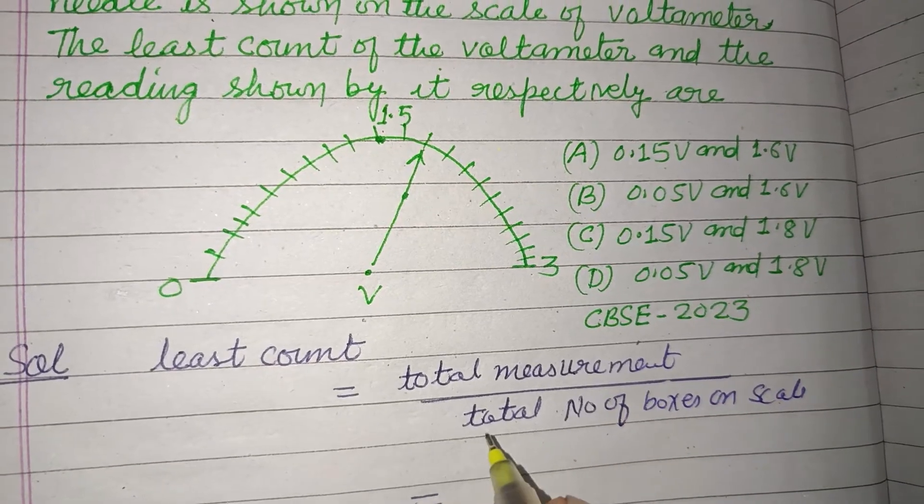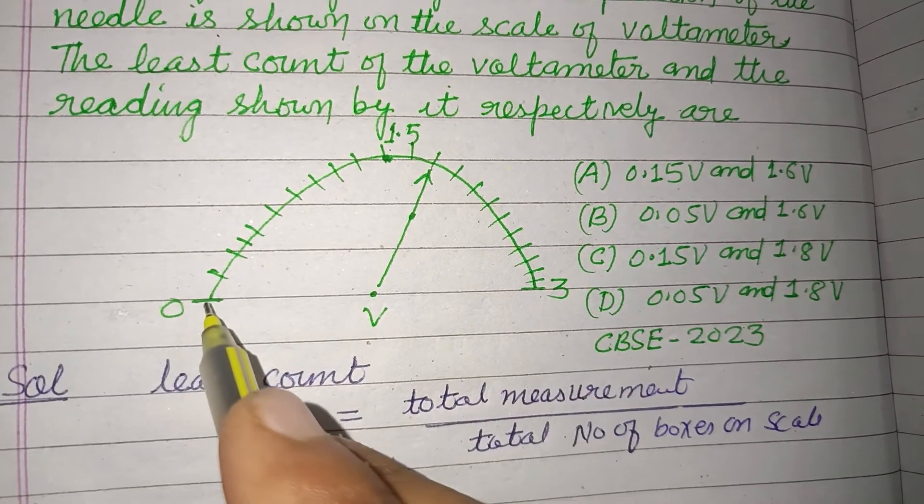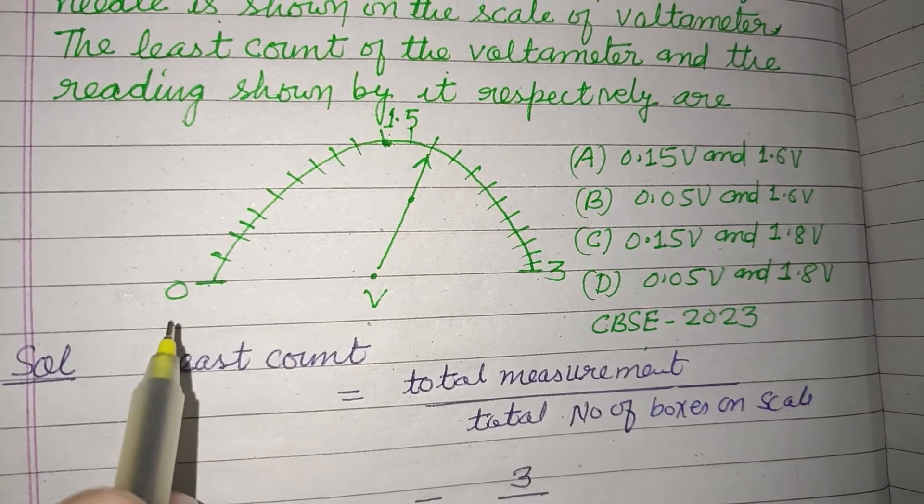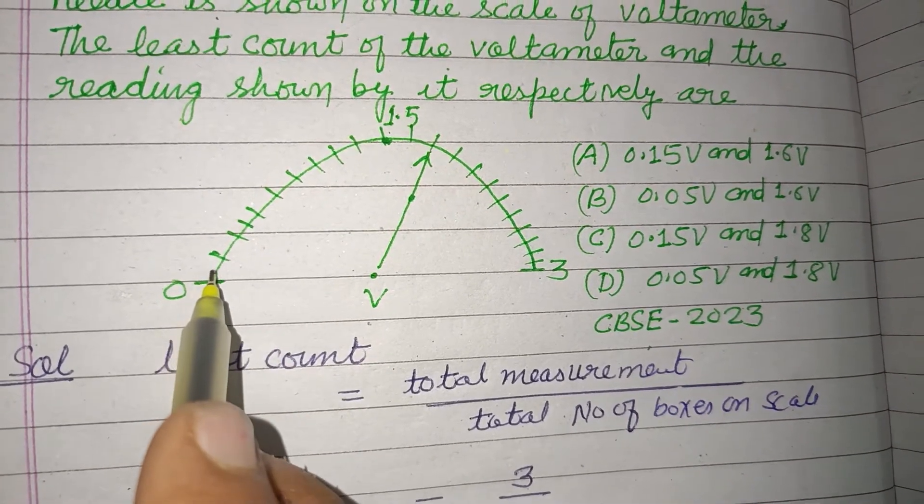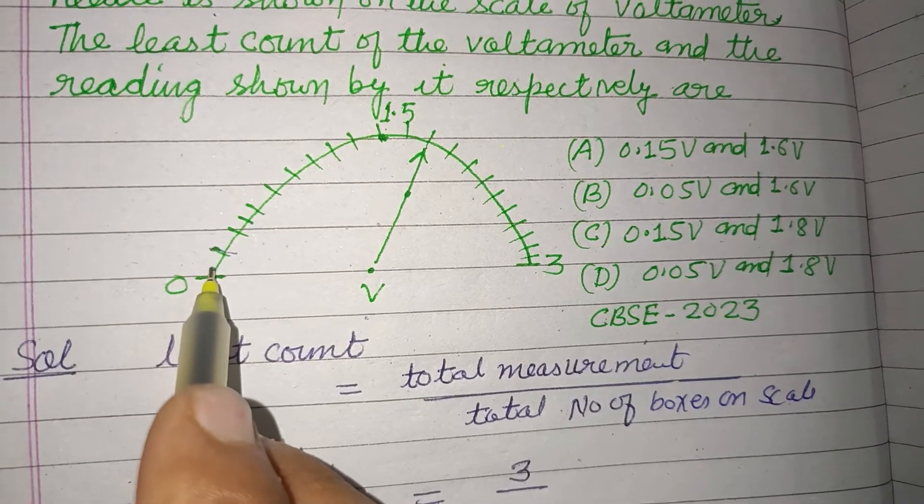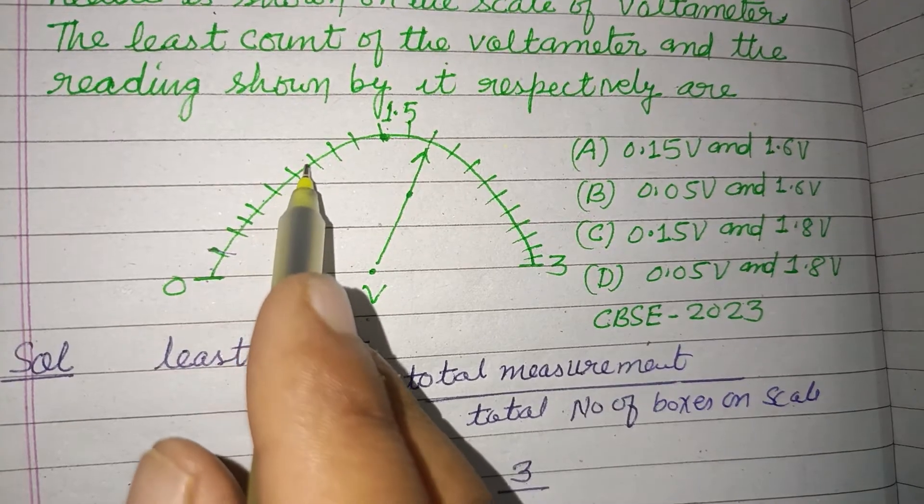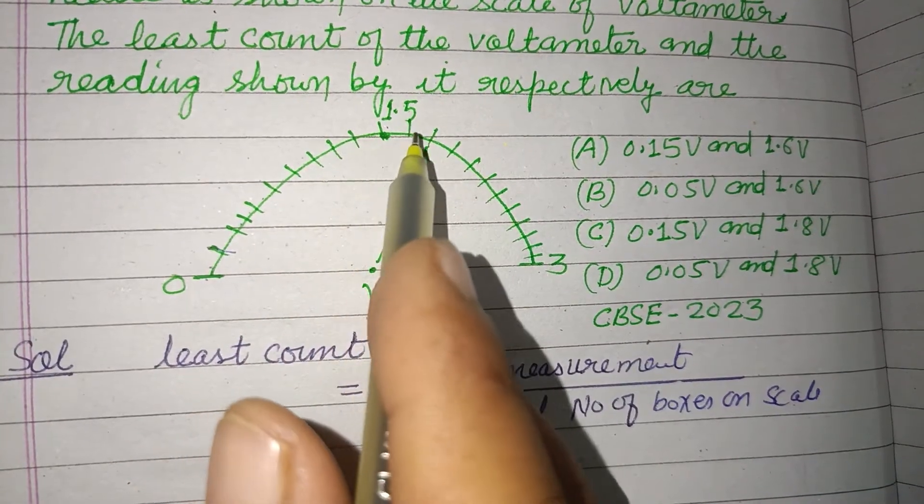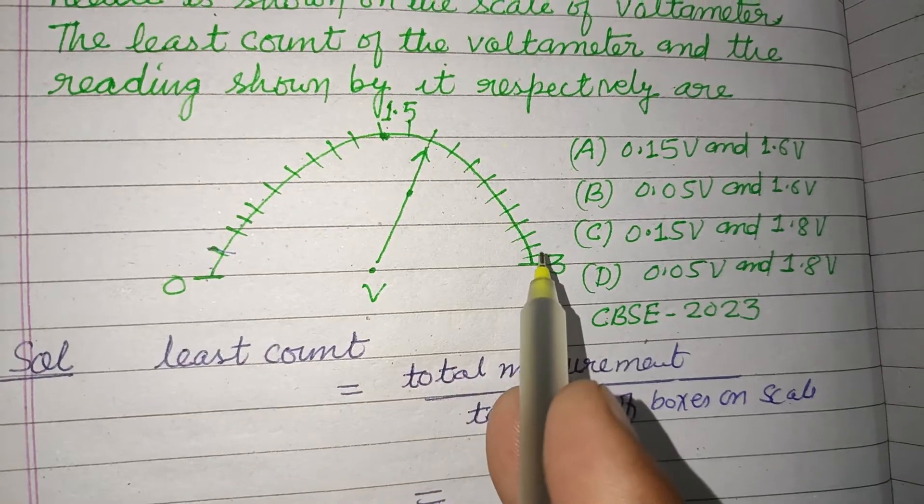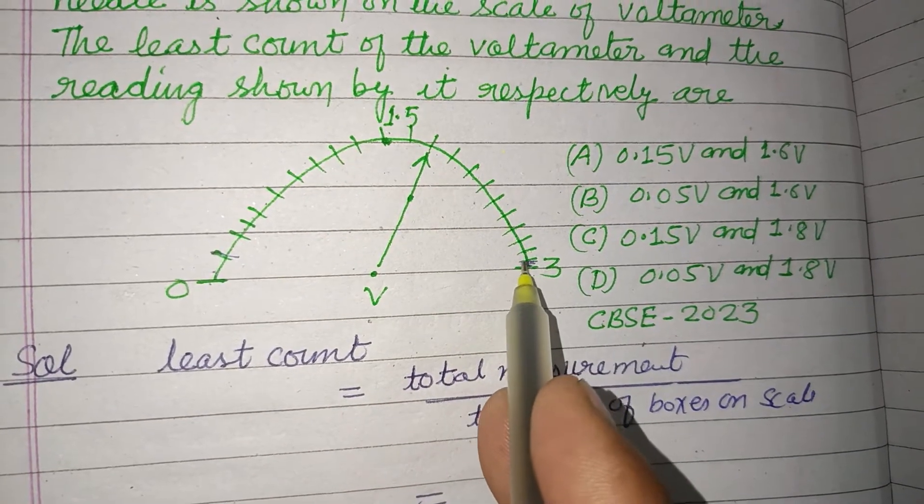So here, total measurement is 0 to 3, so this is 3. And total number of boxes on scale: 1, 2, 3, 4, 5, 6, 7, 8, 9, 10, 11, 12, 13, 14, 15, 16, 17, 18, 19, 20. These are 20.